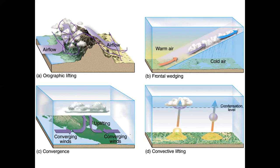Florida is a perfect place to talk about convergence and convection. Air from over the Gulf of Mexico moves over Florida, air from the Atlantic comes over Florida — the air is converging. Then it warms up and convects, it rises, and we get lots of thunderstorms. Florida holds the record for the most thunderstorms of any state in the Union.